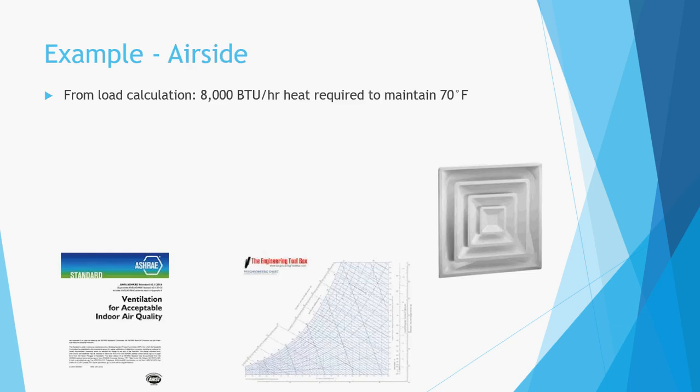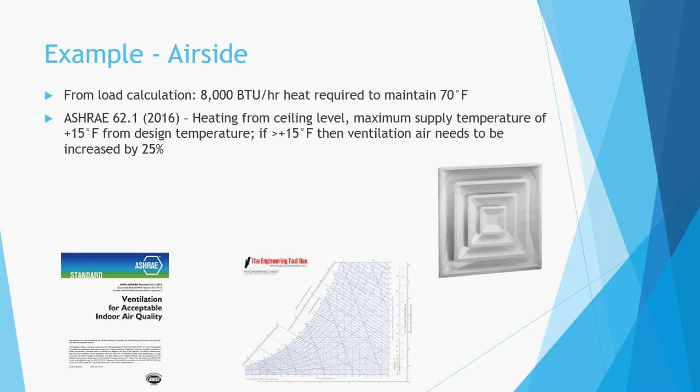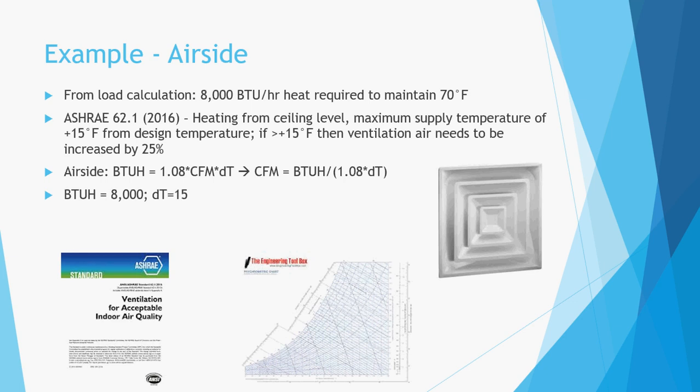The heating load is 8,000 BTUs per hour with a design set point of 70 degrees. ASHRAE 62.1 allows a supply temperature of a maximum 15 degrees above the set point, so we will use 85 degrees as our heating supply air temperature. Using the air side equation solved for CFM — with a heating load of 8,000 and a delta T of 15 — we get 500 CFM at 85 degrees to maintain the room at 70 degrees on the design day.